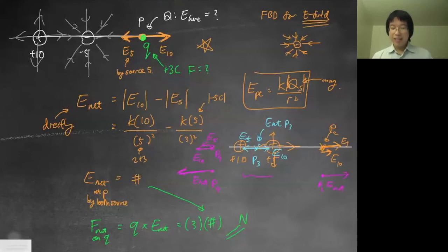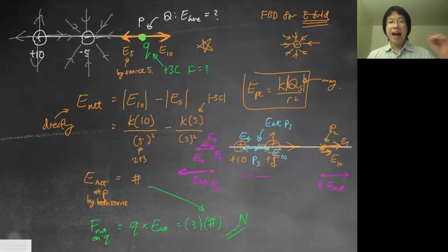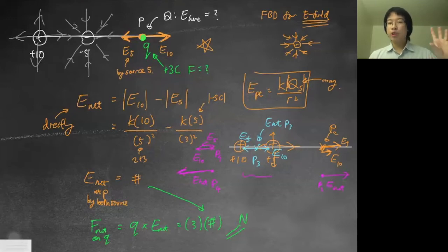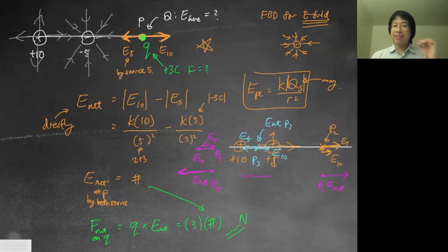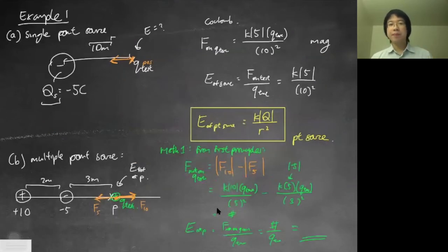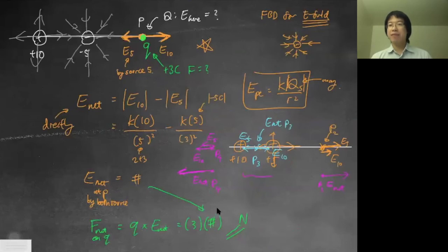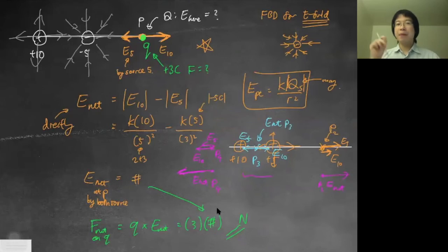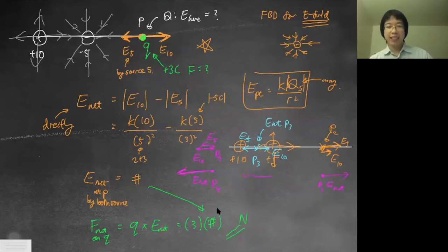To summarize so far: for a single point charge, calculate E from first principles. For multiple point charges, you can calculate the net force and divide by Q_test, or just add up all the individual fields using the principle of superposition. Both methods give the same answer, but the superposition method is more efficient.